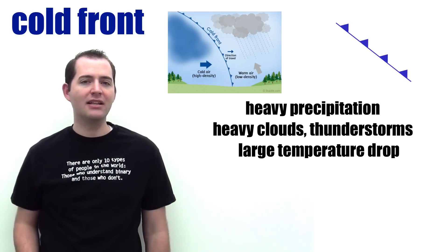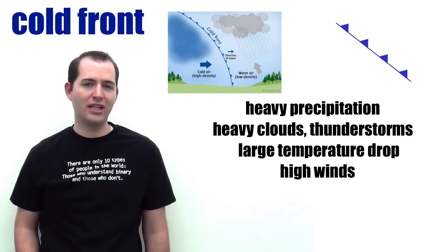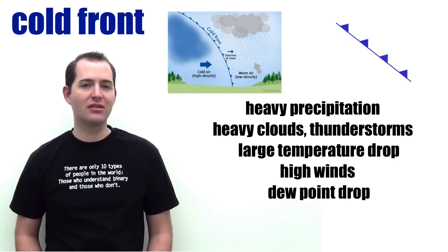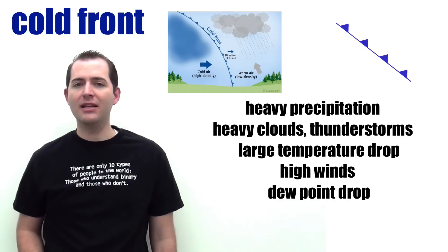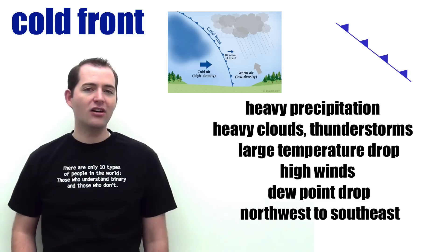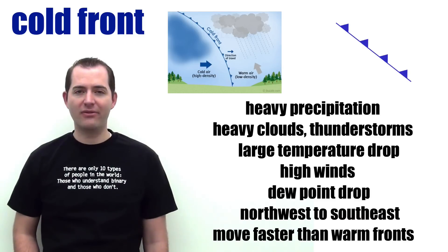Cold fronts also typically have high winds associated with them. The dew point observed also typically drops, and cold fronts typically move from northwest to southeast. Cold fronts also usually move faster than warm fronts.